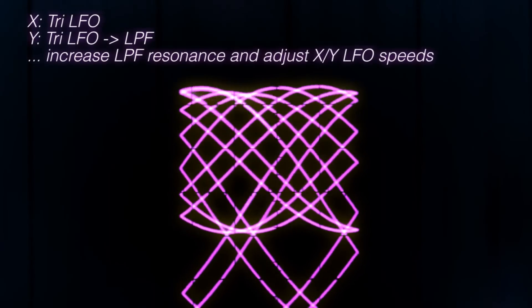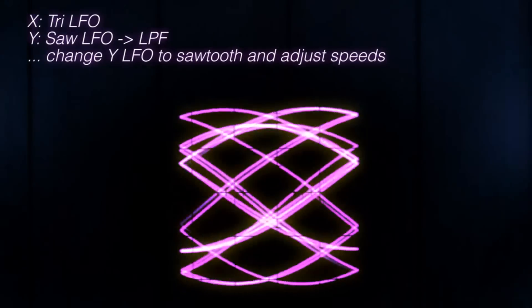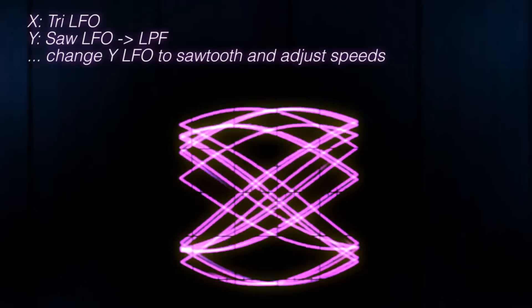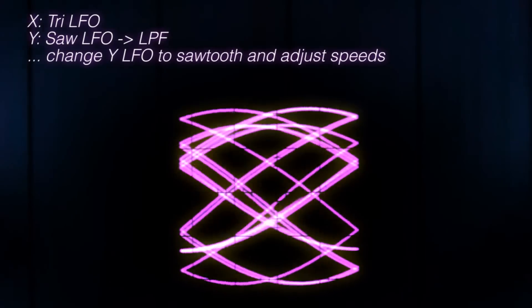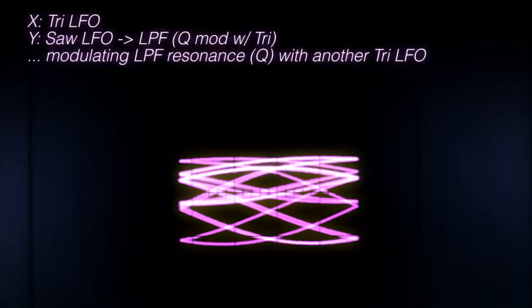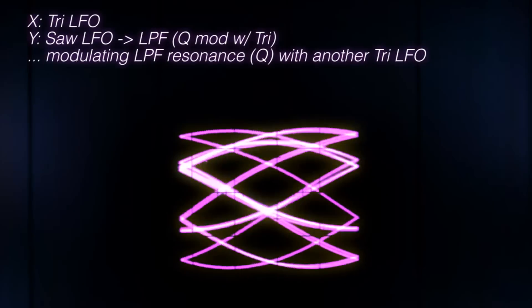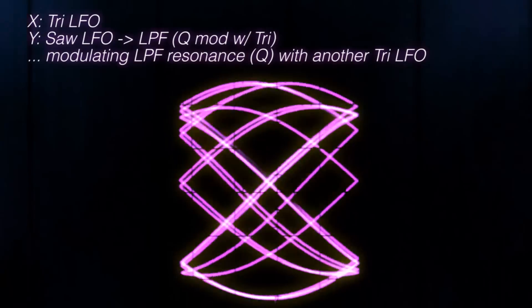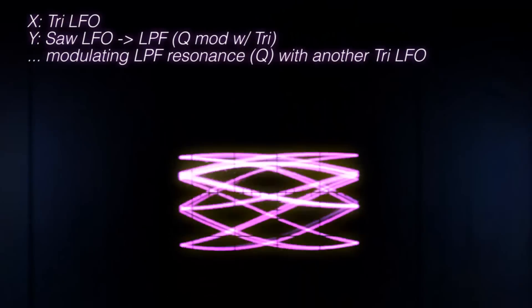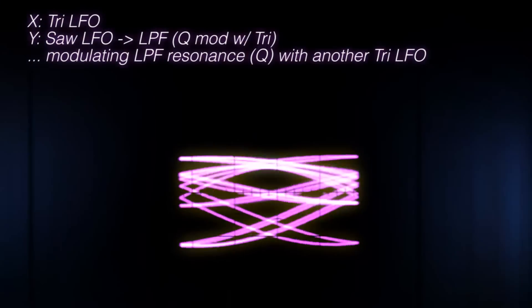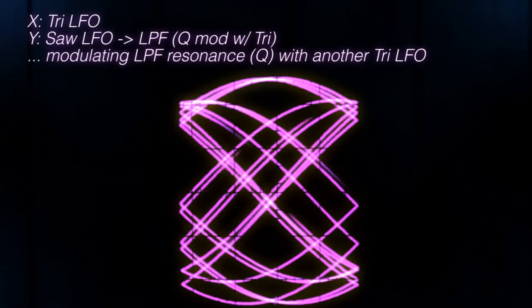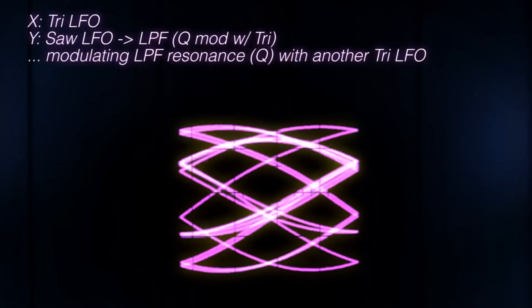Let's switch the Y LFO from triangle to sawtooth and modulate the filter resonance with another slow triangle LFO. Then let's get rid of the third triangle LFO again and just play around with the cutoff frequency, resonance and LFO speeds manually.